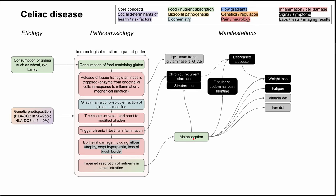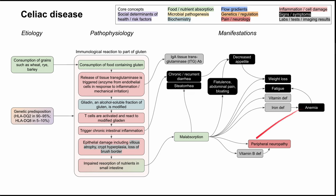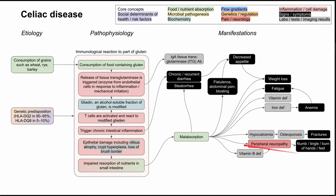Other manifestations from malabsorption: patients can be fatigued, vitamin deficient, and mineral deficient. Iron deficiency can lead to iron-deficiency anemia, which can exacerbate fatigue. Vitamin B12 deficiency can predispose a patient to peripheral neuropathy, presenting with numbness, tingling, and burning of the hands and feet. If calcium isn't absorbed, the patient may become hypocalcemic, leading to osteoporosis and accidental fractures. Children or adolescents with celiac disease may also have failure to thrive, growth failure, or delayed puberty.